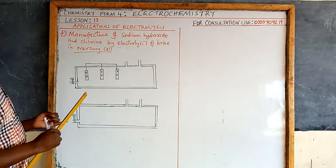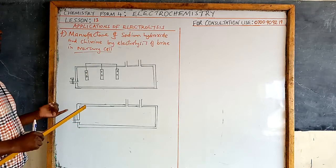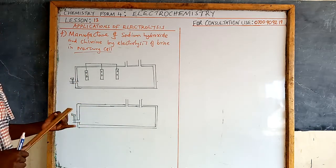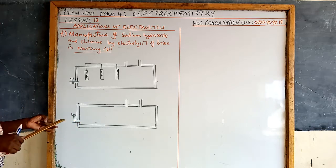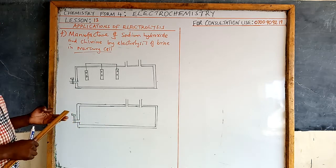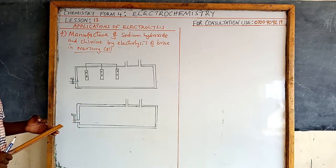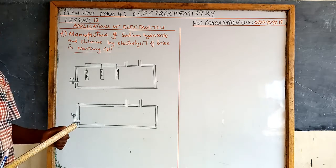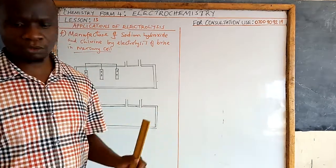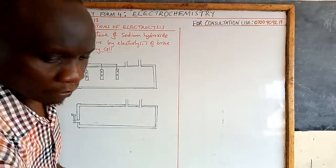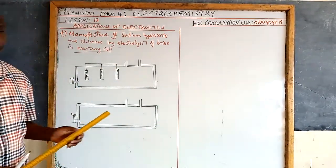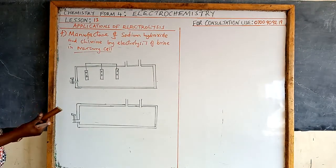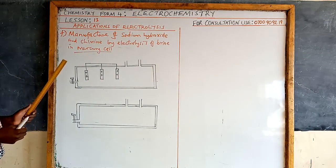In lesson 12, we looked at five applications of electrolysis, where we had extraction of reactive metals, electroplating, galvanizing, and sacrificial protection. Now we are going to look at one more use of electrolysis, which is the manufacture of sodium hydroxide and chlorine.